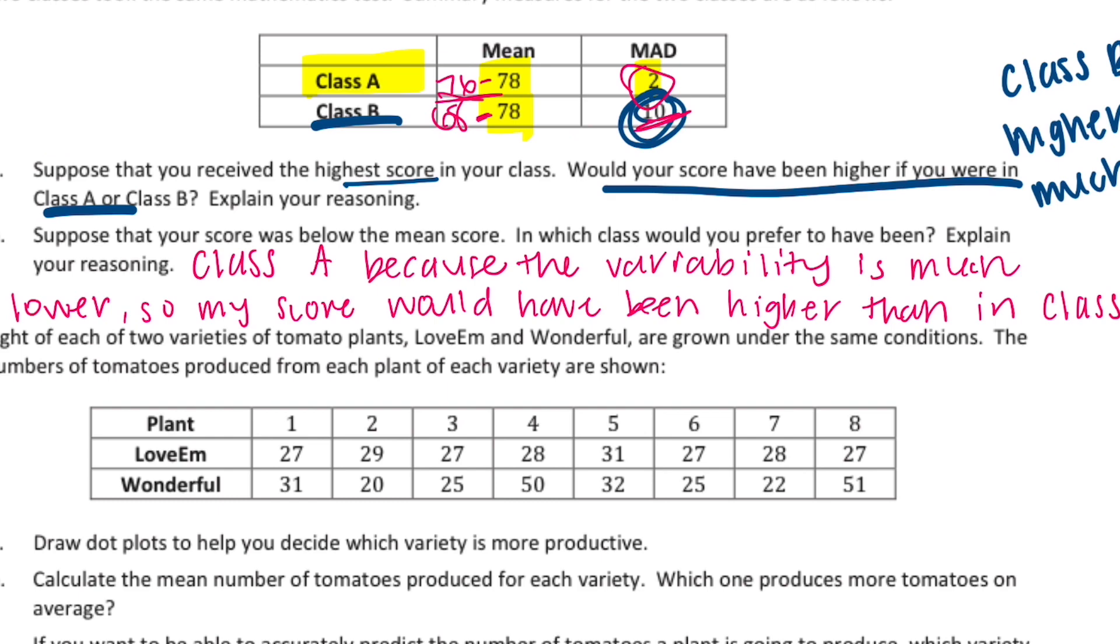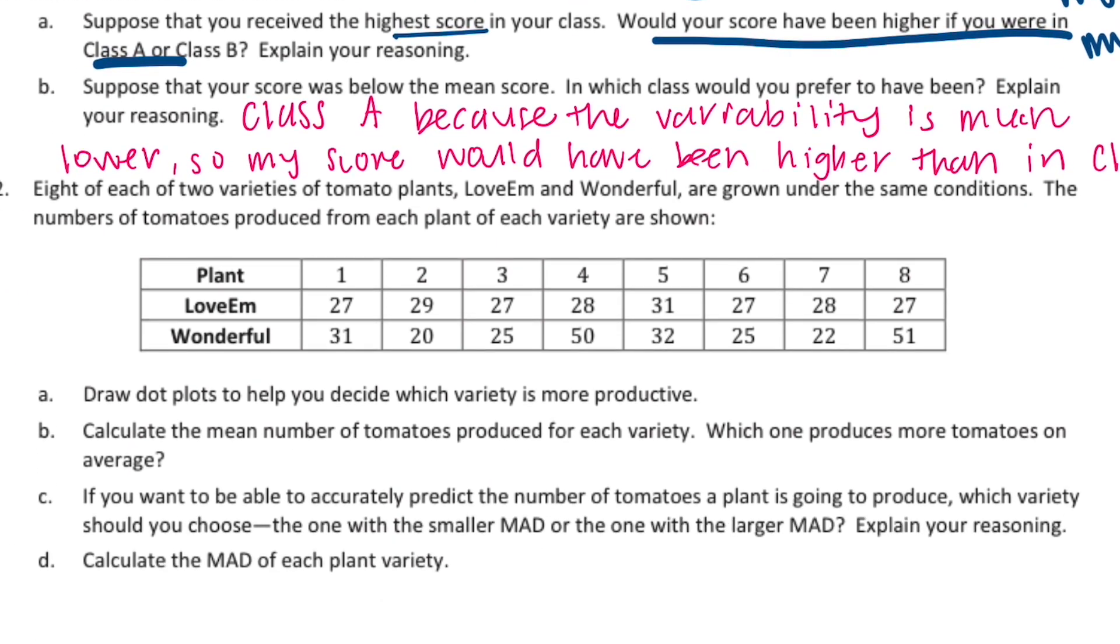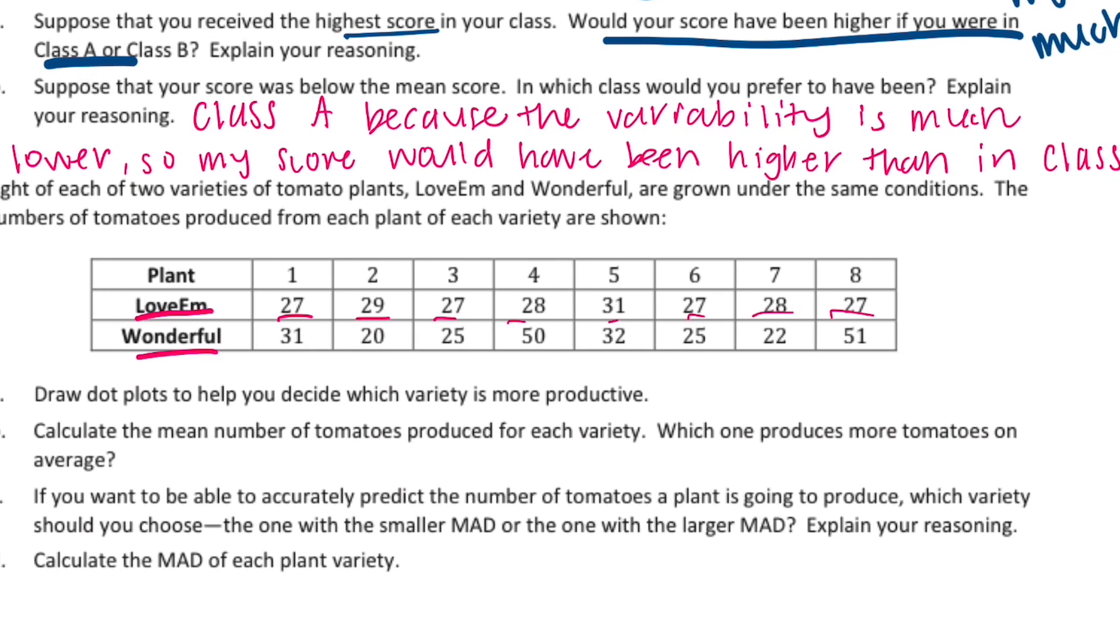Number two. Eight of each of two varieties of tomato plants, LoveEm and Wonderful, are grown under the same conditions. The number of tomatoes produced from each plant of each variety are shown below. There are eight plants of each variety. Part A: draw dot plots to help you decide which variety is more productive. Okay, so we have LoveEm and Wonderful. LoveEm ranges from 27, I think is the lowest, to 31 being the highest.